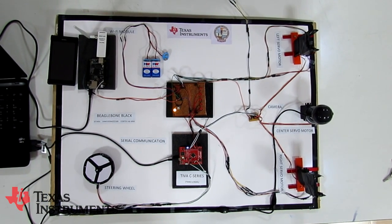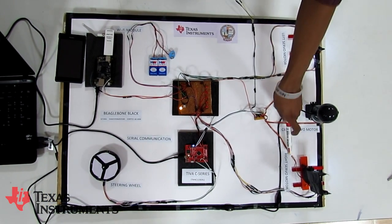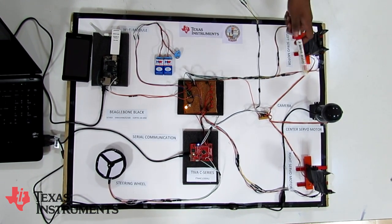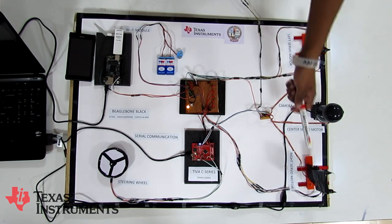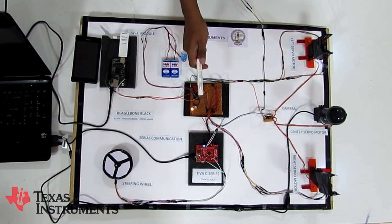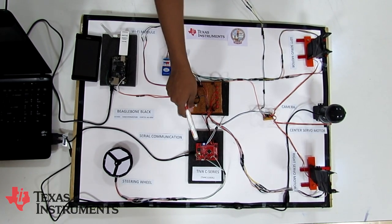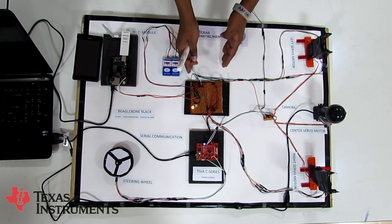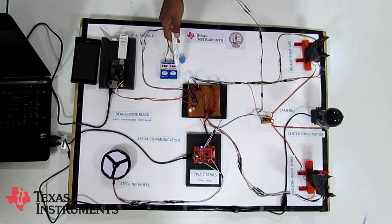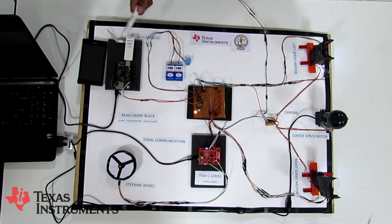Here we have the setup for our adaptive vehicle lighting system. We have our right headlight, our left headlight, and in the center, the camera. All three are mounted on servo motors controlled by the Tiva C-Series microcontroller board provided by Texas Instruments. Here we have the headlight controlling unit, which is powered by a 29-volt battery, and our BeagleBone Black connected to a WiFi module.